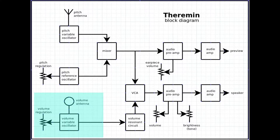This is it for the volume variable oscillator. In future videos we will go through the remaining stages of the theremin: the volume resonant circuit, the VCA or voltage-controlled amplifier, and the audio preamp and amplifier. Finally we will connect the antennas and fine-tune the various elements to make it all work together. See you soon and happy experiments!